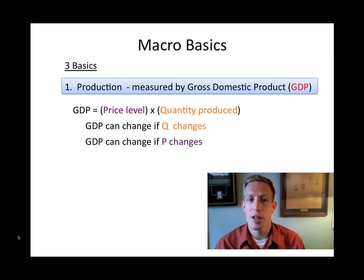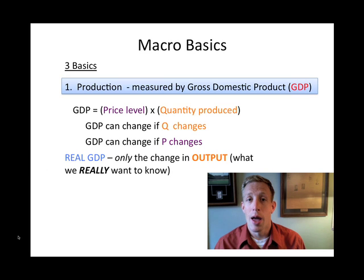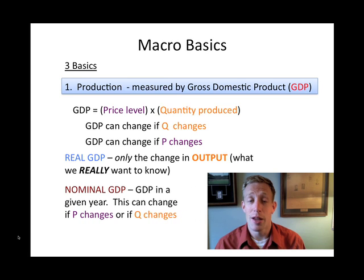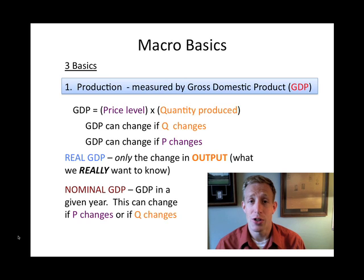So when we look at GDP, we split it into two areas. We look at real GDP, which is what we really want to know — how much output are we producing and how much does it change. The other way of looking at GDP is through nominal GDP, which is just the GDP in a given year. The problem with nominal GDP is that while it's easy to collect, it includes any changes in price that may occur. Real GDP adjusts prices to keep them constant so that we can measure actual output changes rather than price changes.